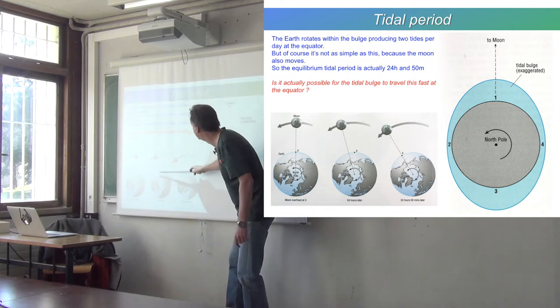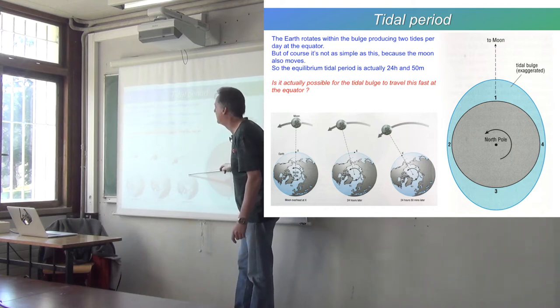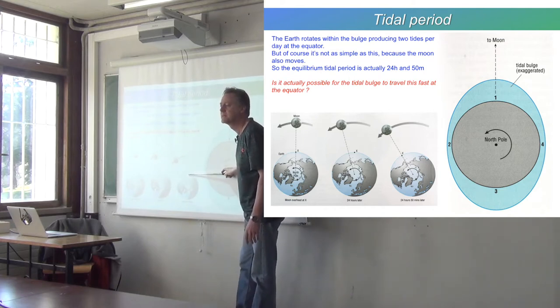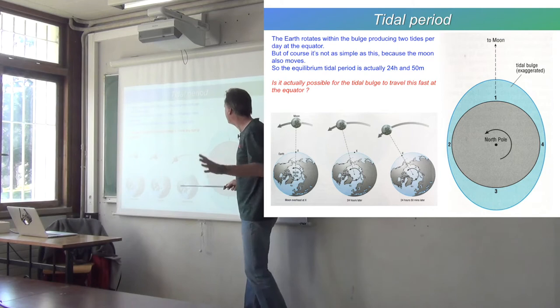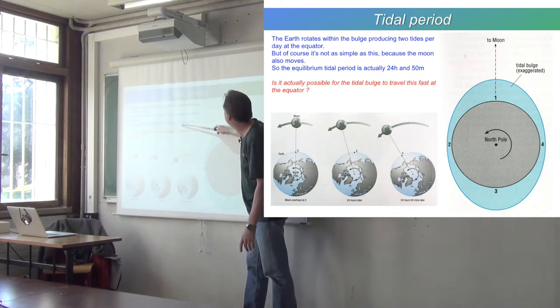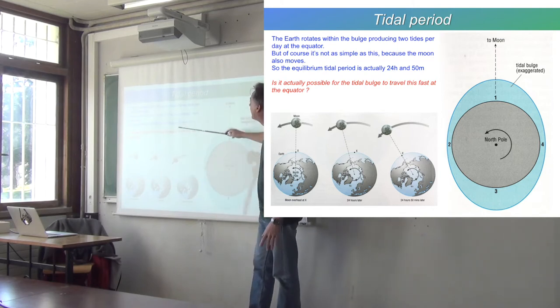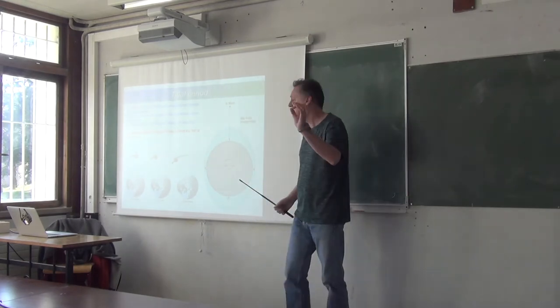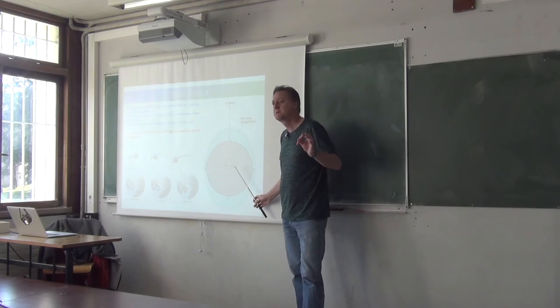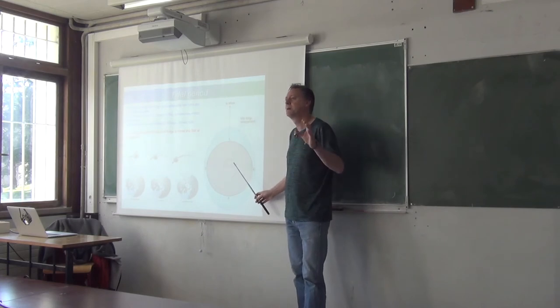So this sidereal day here is actually 23 hours and 56 minutes, because at the same time, the Earth is going round the Sun. The solar day is 24 hours. So anyway, this tidal period here is 24 hours and 50 minutes, so half of that is 12 hours and 25 minutes. That's the period of the lunar semi-diurnal tide, 12 hours and 25 minutes.